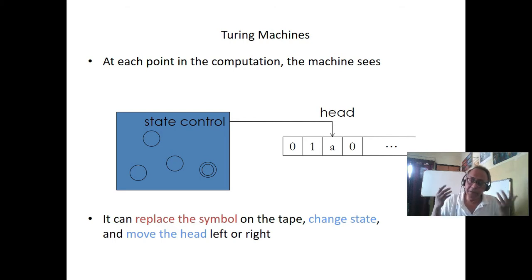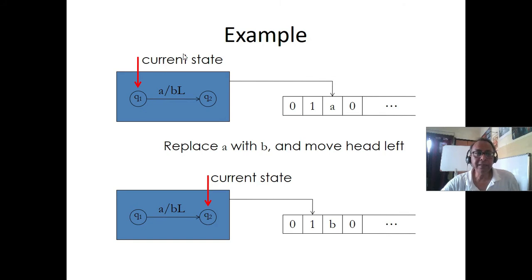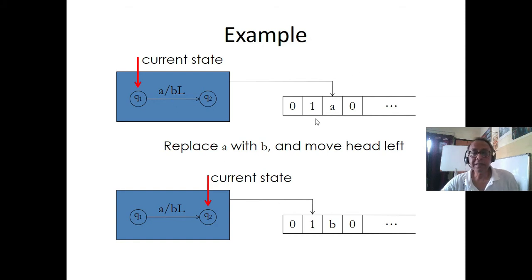This is the current state. So how to make the current state - this is the symbol. In pushdown automata also you have the current state. So this is your current state A, means the current state, and this is your Q1 - this is the state. And you are going to left. Now the state is symbol B. So this is a Turing machine: this is A, then you read it, your write head changes A to B, and it goes to left.